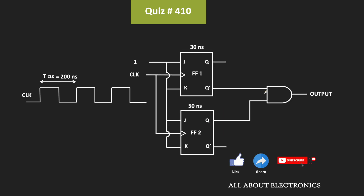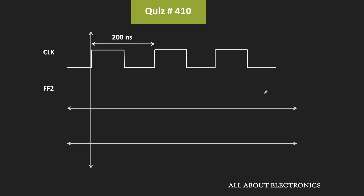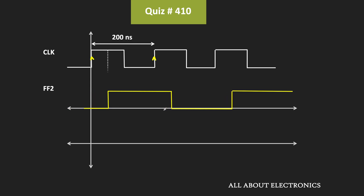Now let us see the output of the second flip-flop. Similar to the first flip-flop, in this second flip-flop both J and K inputs are connected to logic one, and therefore at every clock transition the output of this flip-flop will toggle. If this second flip-flop does not have any propagation delay, initially its output will be 0, and at the first clock transition its output will toggle to logic 1, remaining in that state until the next rising edge. But the propagation delay of this second flip-flop is equal to 50 ns, meaning this waveform will get delayed by 50 ns. This is how the output of the second flip-flop will look like.